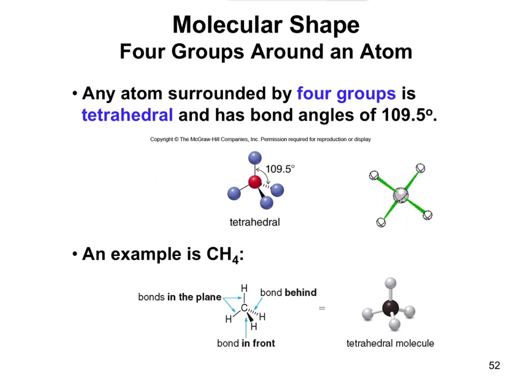The next one is tetrahedral. This is a very common one for carbon because we said carbon forms four bonds. If you look at this carbon, if it has four bonds, basically no double bonds.